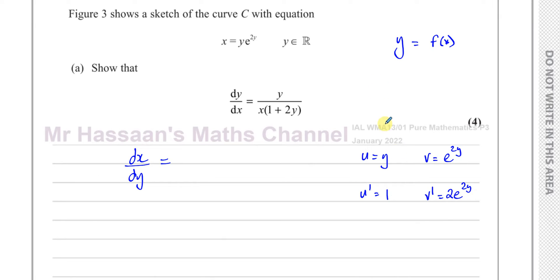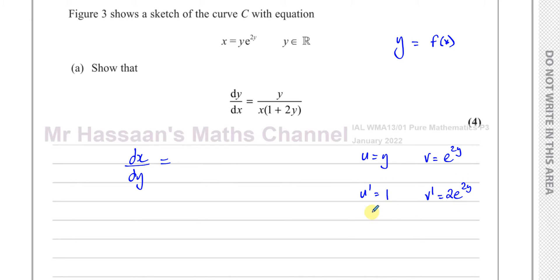This is different from what we do in P4, when differentiating y with respect to x — in that case we'd write 1 times dy/dx, and 2e to the power of 2y times dy/dx. That's implicit differentiation. Here we're differentiating with respect to y, so we don't include those dy/dx factors.